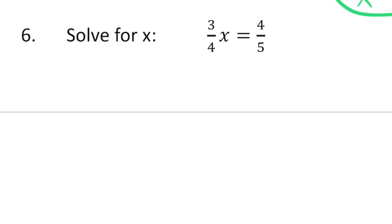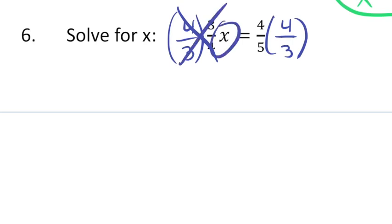In this next problem, number 6, I'm not going to have to do quite as much work. I know the rule now that if there's a fraction in front, I multiply by the reciprocal. So I'm going to multiply by 4 thirds to both sides. That's going to cancel out the 4 and the 3, leaving us with just the x.